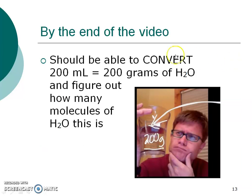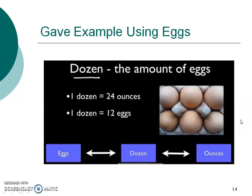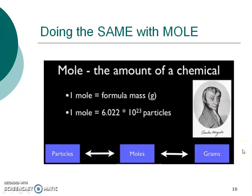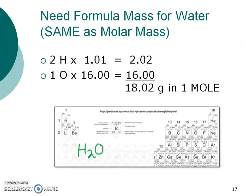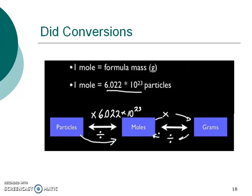The goal is that by the end of the video, you can take 200 milliliters — which equals 200 grams of water — and convert it into molecules of water. The intro video gave an example about what a dozen is, gave you conversions for eggs to dozen and eggs to ounces, and then did those conversions. The same thing was done with the mole, because a mole is the amount of the chemical. He talked about the formula mass in grams and also about particles. We are going to go a step further and also talk about 22.4 liters of gas.